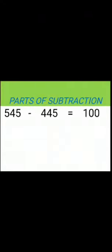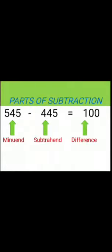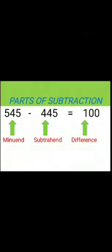Children, there are three parts of subtraction. These are minuend, subtrahend, and difference. Minuend is the first number or bigger number in subtraction. Subtrahend is the number to be subtracted from the bigger number. And the last, difference, is the result of the subtraction problem.